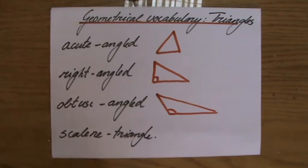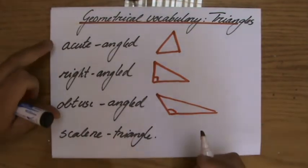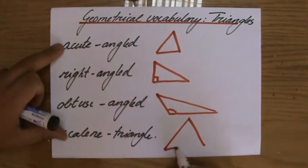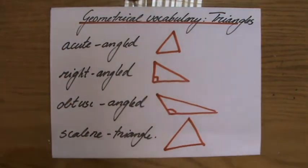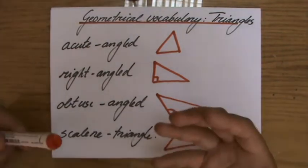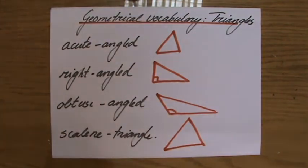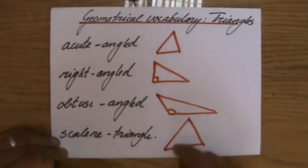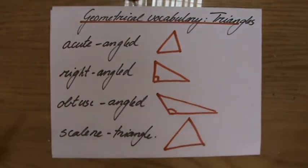And the last one here, the scalene triangle. So a scalene triangle has three sides, and all the lengths are different, and all the three angles are different. So there's no angle the same, and there's no length which is equal in length.